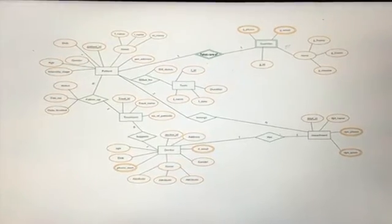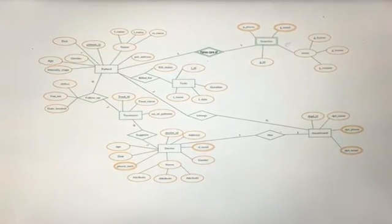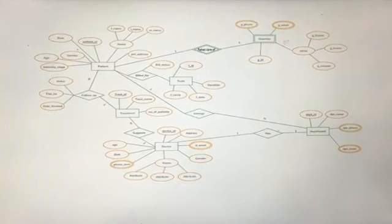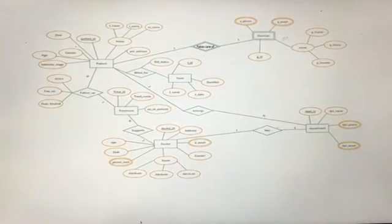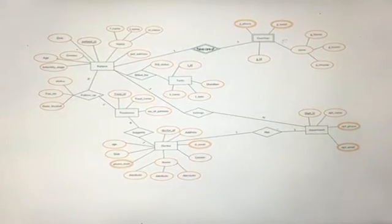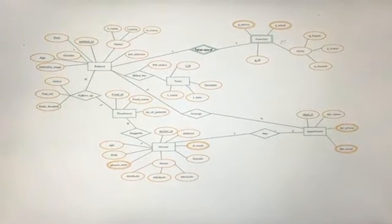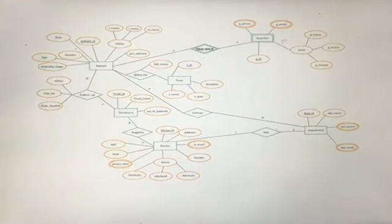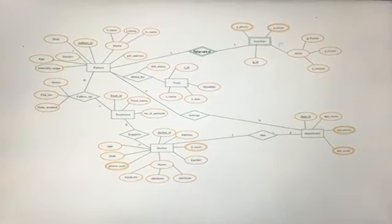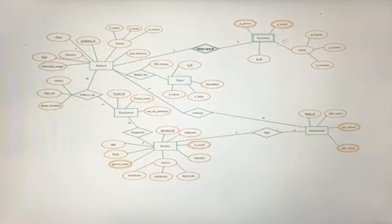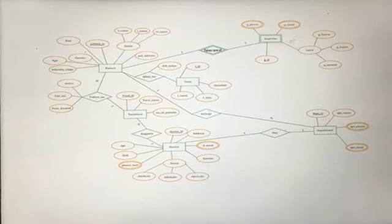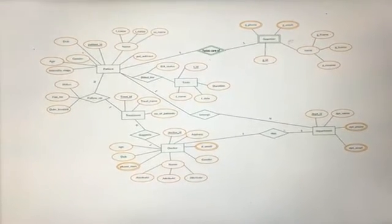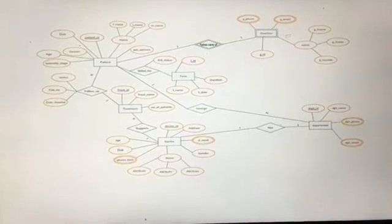This is our entity relationship diagram. We have six entities, in which Guardian is a weak entity. Our project mainly concentrates on Patient and Doctor. In Patient, name is a composite attribute because it consists of three attributes: first name, last name, and middle name. In Doctor, age is a derived attribute because it is derived from the date of birth. Doctor also has multivalued attributes like phone number and email.